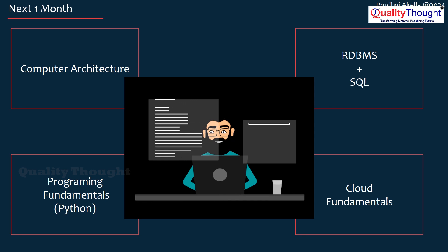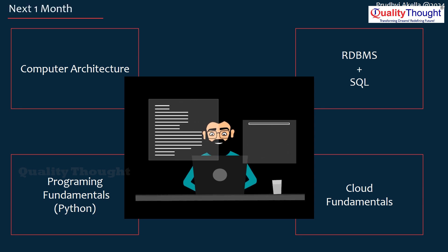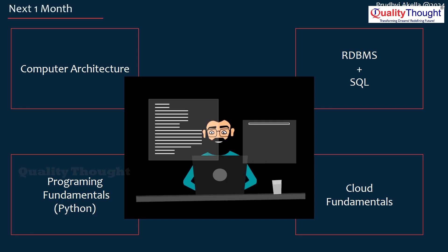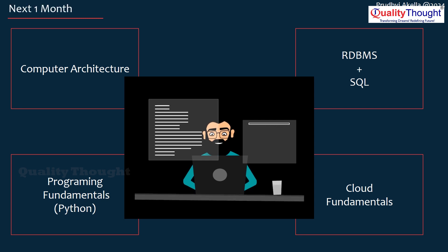In the next one month, you will be getting trained on four major components. The first is computer architecture — we'll start by understanding what a computer is and how it works. Then we'll look into RDBMS along with SQL, which is Structured Query Language. After that, we'll cover programming fundamentals using Python, because Python is one of the fastest growing programming languages. And finally, you cannot imagine computer science without the cloud, so we'll be teaching cloud fundamentals using AWS.